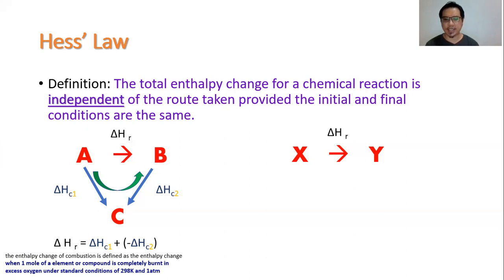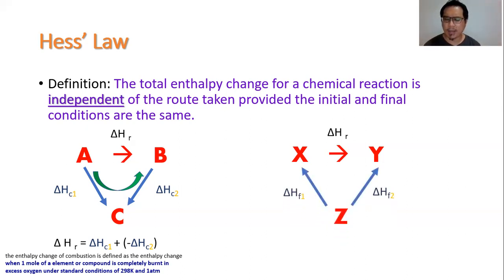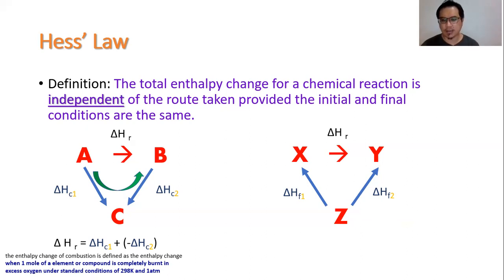For the cycle on the right — conversion of X to Y — what if the supporting information gives the enthalpy change of formation of X and the enthalpy of formation of Y? When enthalpy of formation is given, you need the elements written at the bottom. So we have enthalpy of formation one — the conversion of elements to compound X above — and enthalpy of formation two — the conversion of Z, which is the elements, to compound Y. The cycle is constructed based on the supporting information given.